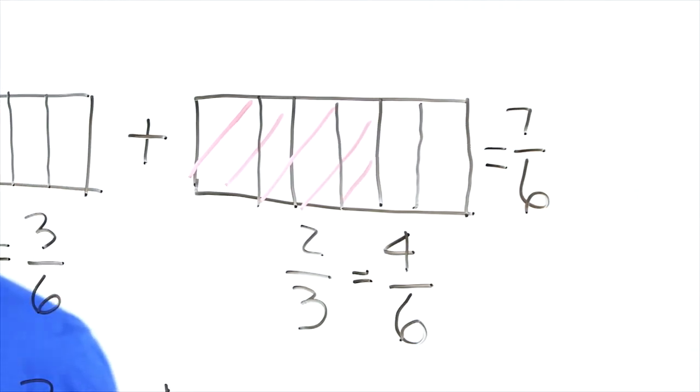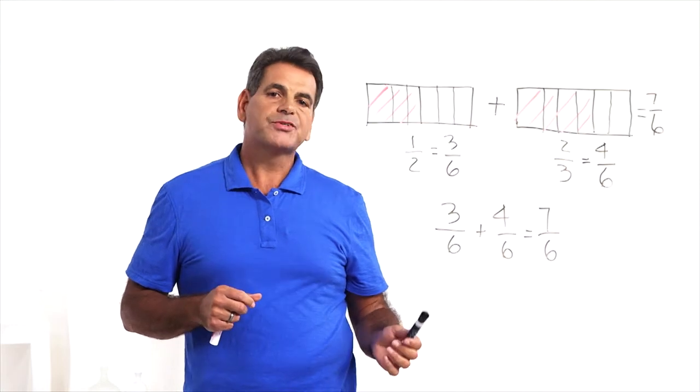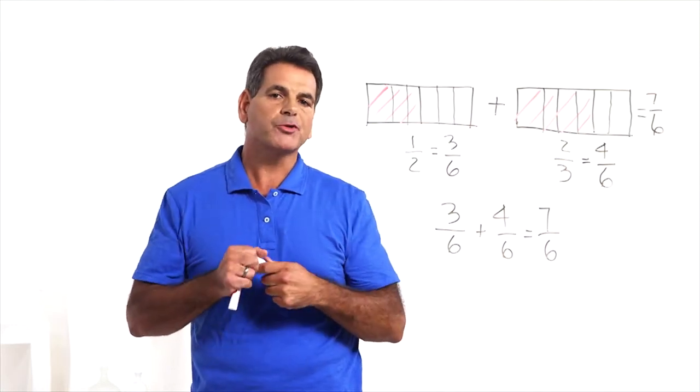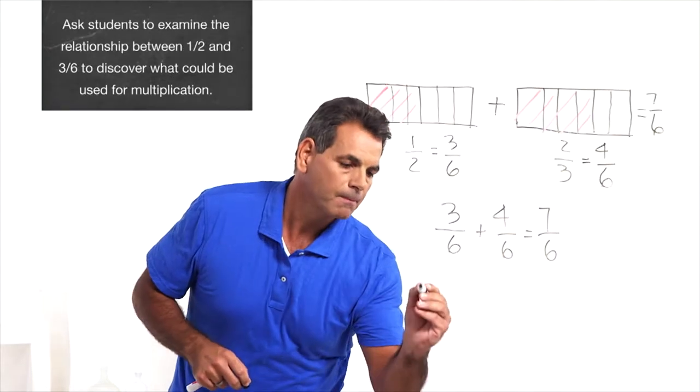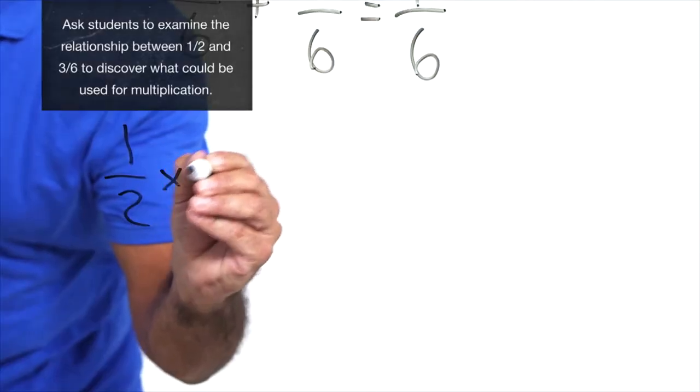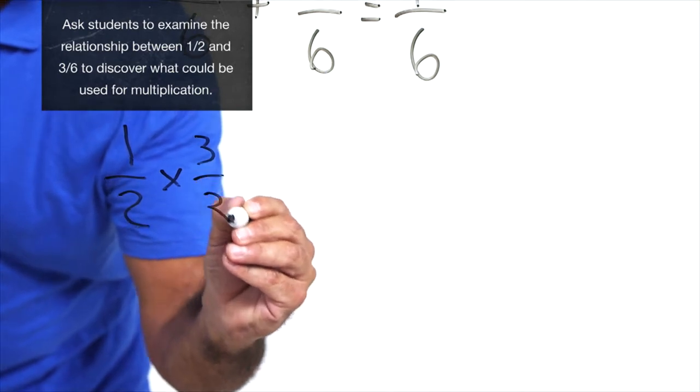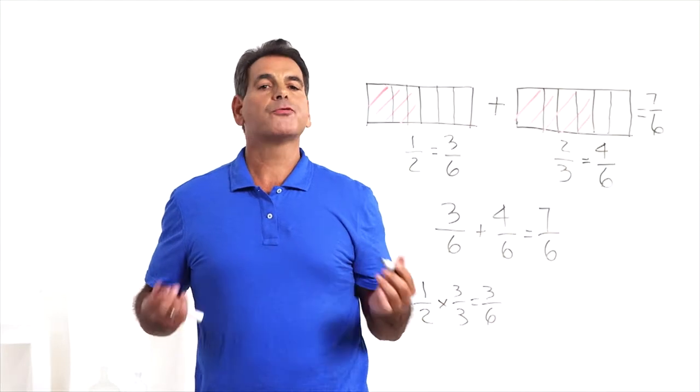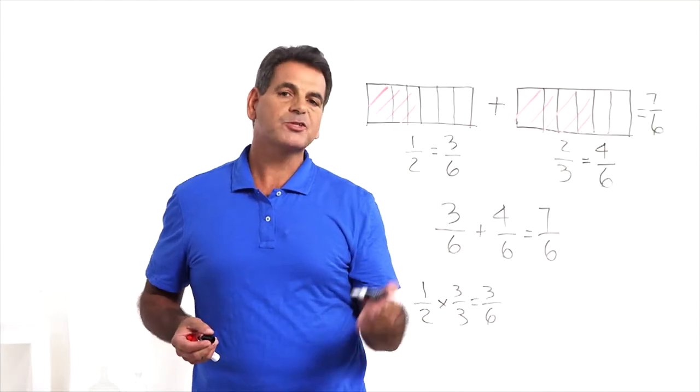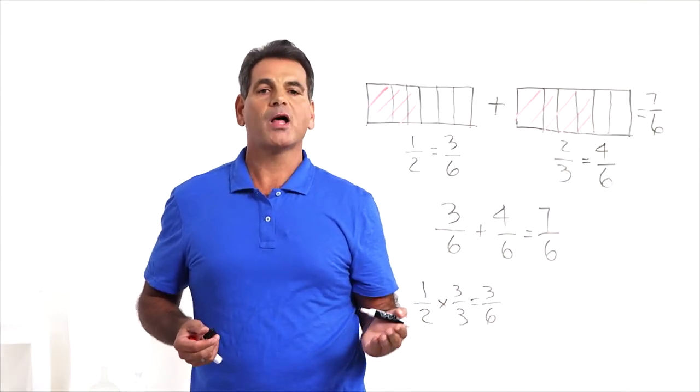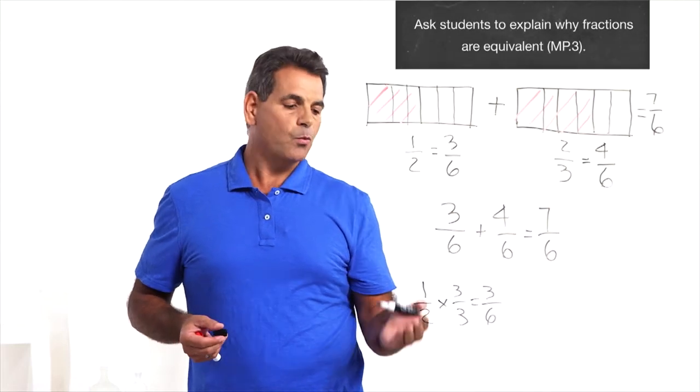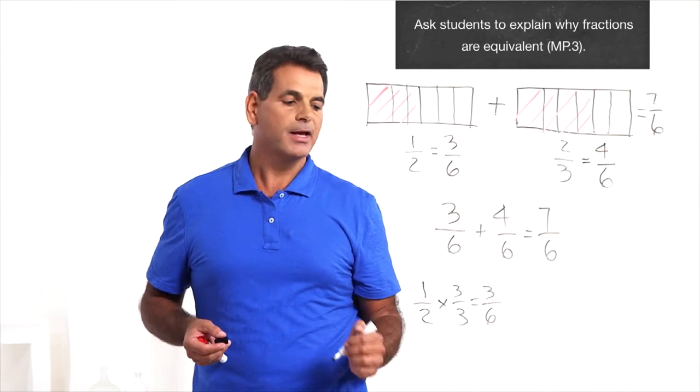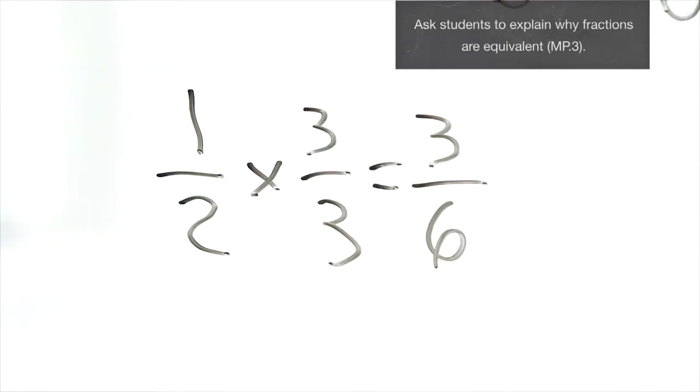A very important thing to point out at this time is that we multiplied 1 half to get 3 sixths. What did we multiply 1 half by? We multiplied by 3 over 3. 3 over 3 is the same as 1. Relate this back to the identity property of multiplying by 1 doesn't change the value of the number. 1 half times 3 over 3 is the same as 1 half times 1. That's why 3 sixths is equivalent to 1 half.